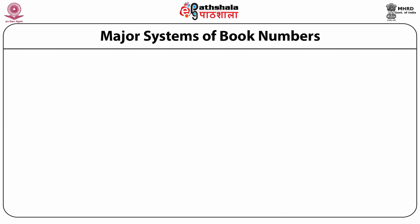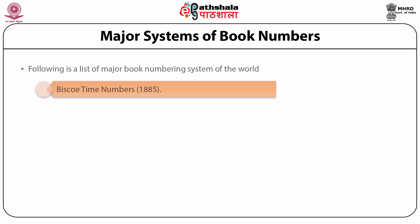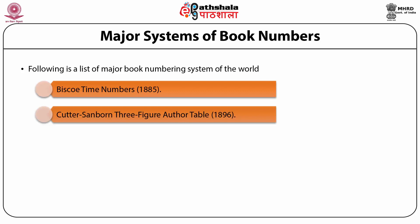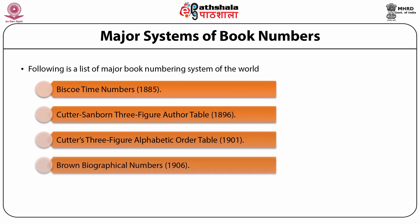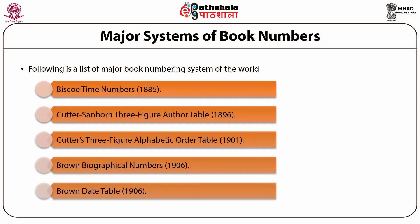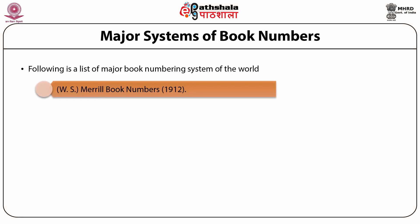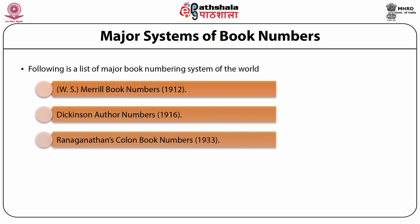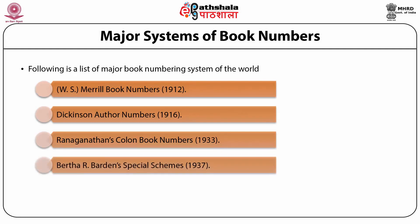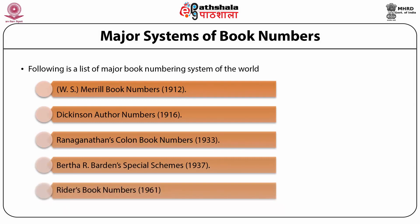The major book numbering systems of the world so far are: Biscoe time numbers published in 1885; Cutter-Sanborn three-figure author table, 1886; Cutter three-figure alphabetical order table, 1901; Brown's biographical numbers, 1906; Brown's date table, 1906; Merrill's book number, 1912; Dickinson's author numbers, 1906 in India; Ranganathan's colon book numbers, 1933 (a chronological system); Patsa R. Barton's special schemes for book numbers, 1937; and Rider's book numbering system in his international classification published in 1961.